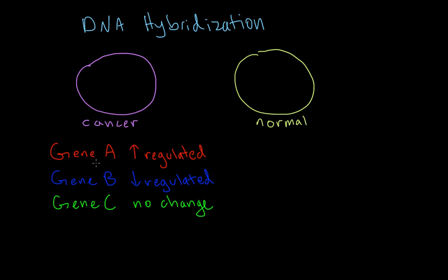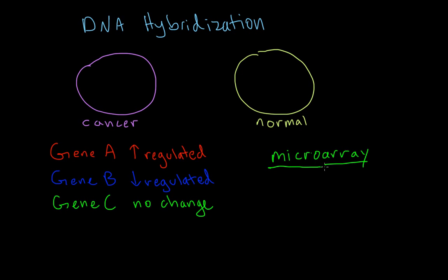What we want to do is use DNA hybridization technology to assay the gene transcription profiles of a cancer cell compared to a normal cell. To do that, we use something known as a microarray. 'Array' means we're assaying a whole bunch of different things — in this case the transcription profiles of many genes — and 'micro' just means it's small, as small as a chip.